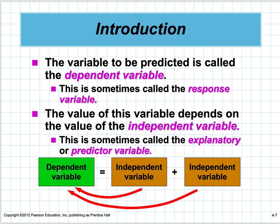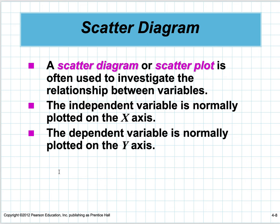The first thing we'd like to do in simple linear regression is to plot the data points to see what it looks like. The independent variable is normally plotted on the x-axis, and the dependent variable is normally plotted on the y-axis.